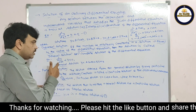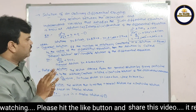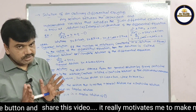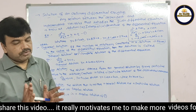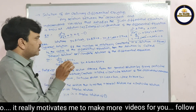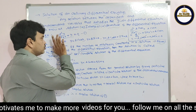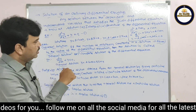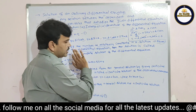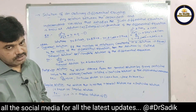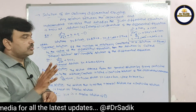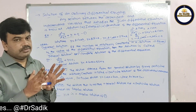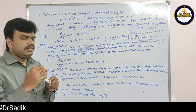If we take y = A·cos(x), there is only 1 arbitrary constant but the order is 2, so it is not a general solution — it is only a solution. Similarly, y = B·sin(x) has 1 arbitrary constant with order 2, so it is also not a general solution. In differential equations, we focus on finding the general solution.